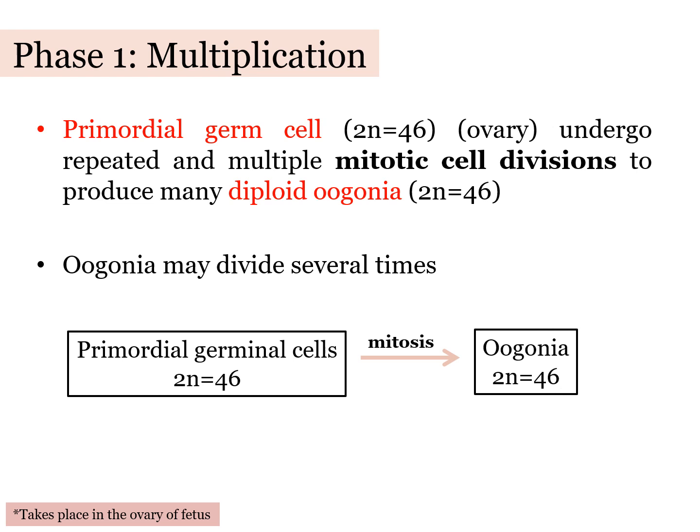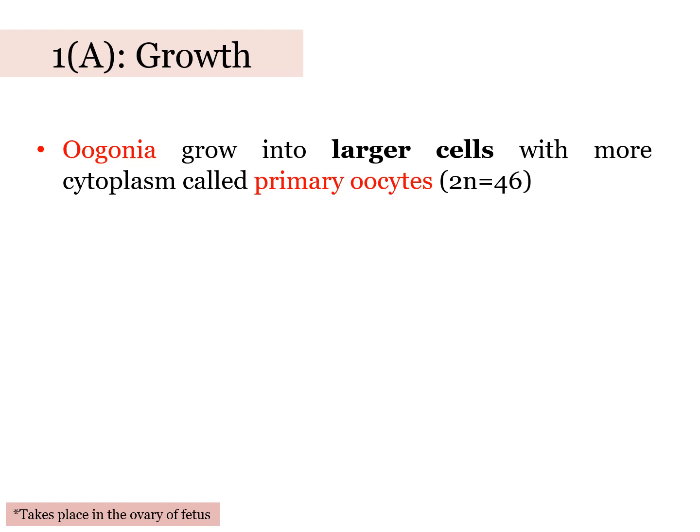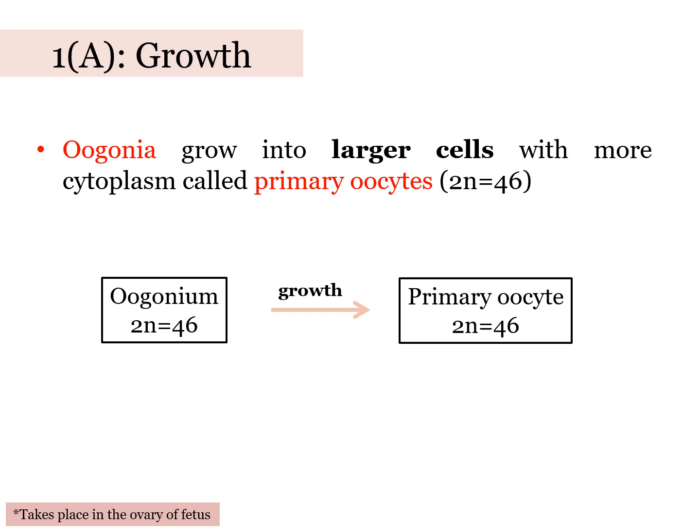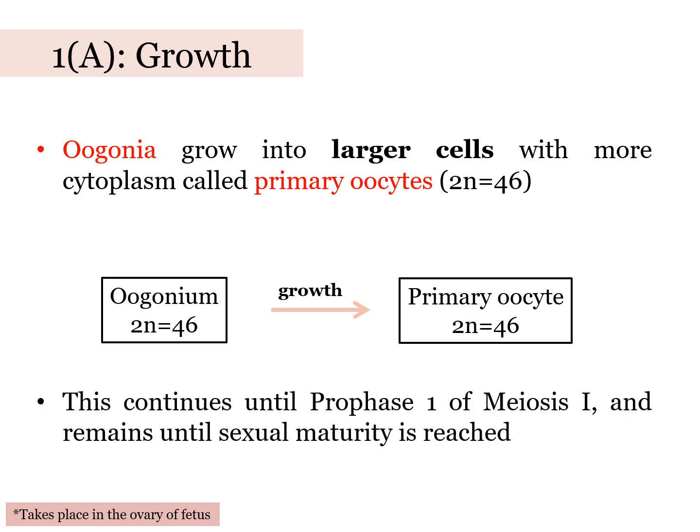Similar to spermatogenesis, in this phase repetitive mitosis takes place, thus producing mainly diploid oogenia. Oogenia grow into larger cells with more cytoplasm and are now termed primary oocytes. This multiplication and growth phase will continue until prophase 1 of meiosis 1. The oogenia will remain dormant until triggered when the female finally reaches sexual maturity.